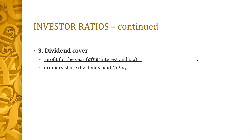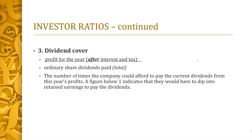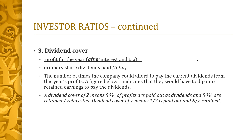Dividend cover: this is the profit for the year after interest and tax — the same figure used for earnings per share — divided by the value of dividends paid in total, so interim plus final. This shows how many times the company could afford to pay the current dividends from this year's after-tax profits. A figure below one means they'd have to dip into retained earnings. A cover of exactly one means all profit was paid out; a cover of two means half retained, half paid, and so on.